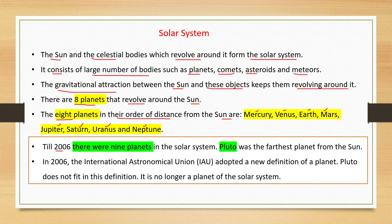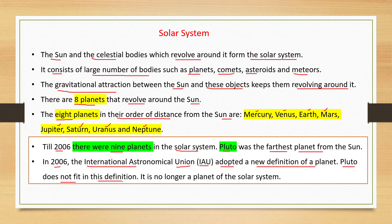Till 2006 there were 9 planets in the solar system. Pluto was the farthest planet from the sun. In 2006, the International Astronomical Union (IAU) adopted a new definition of a planet. Pluto does not fit in this definition, so it is no longer a planet of the solar system.